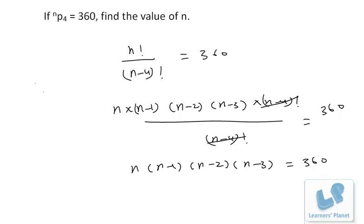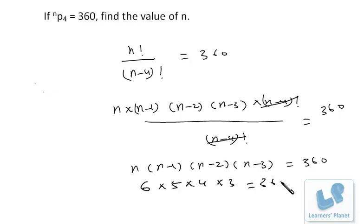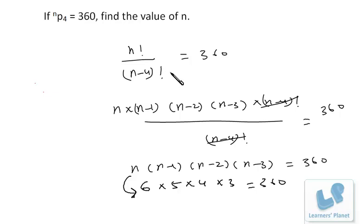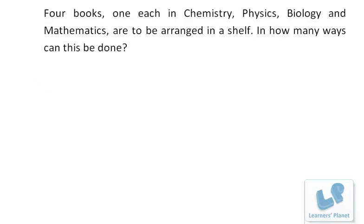Now suppose n = 6, so it is 6 × 5 × 4 × 3. Six fives are 30, into 4 is 120, into 3 is 360. That means n = 6. So this is the solution of this problem — just usage of the formula. Now let's go on to the conceptual problems.